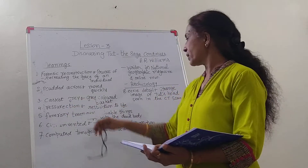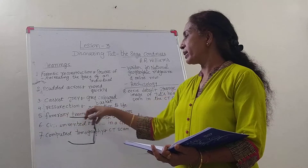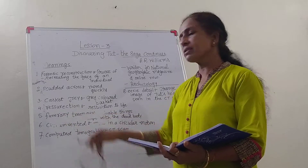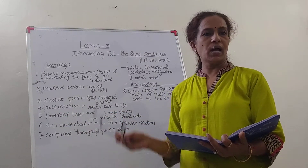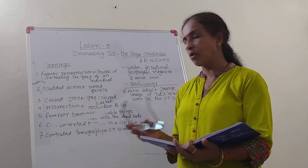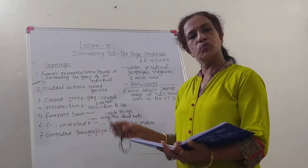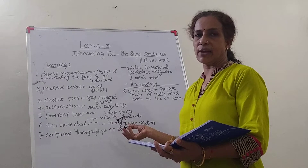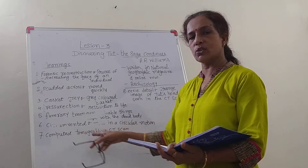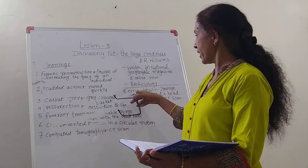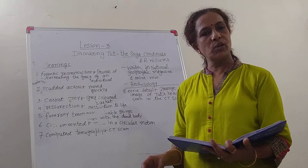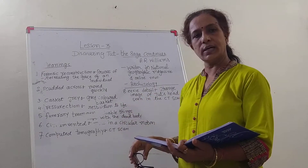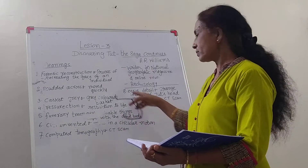Resurrection is rebirth — restoration to life. Funerary treasuries: these are the treasures which, as per Egyptian custom, are put along with the mummies or the dead bodies. Circumvented means to move in a circular manner. Computed tomography is the full form of CT scan. And eerie detail refers to the strange image seen after scanning the head of Tut.